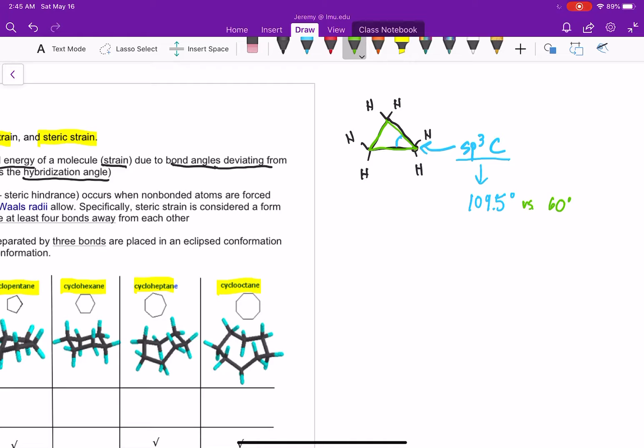So we have a conflict here. Because this is a carbon, it wants to be 109.5, but because it's forming a triangle, it's actually 60 degrees. So what does that really mean?